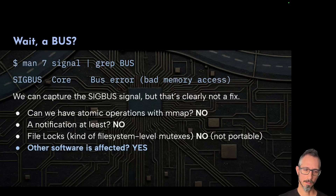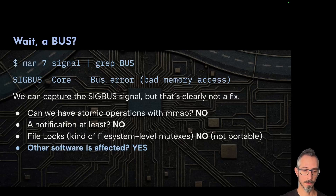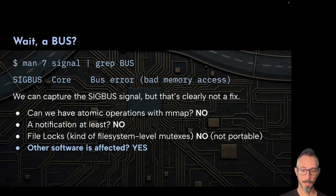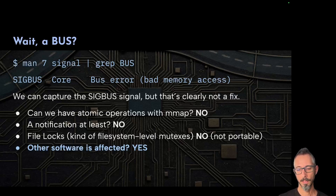A SIGBUS is basically trying to access bad memory. Can we have atomic operations in mmap? No. Can we get notified? No. Can we use locks? Well, only if all programs accessing the file use file locks — but if you're exporting this file system over NFS, for example, that won't be a file lock. So it will fail again. Also, all these file lock operations depend on the kind of file system you are using, and it's not portable across all Unix operating systems.